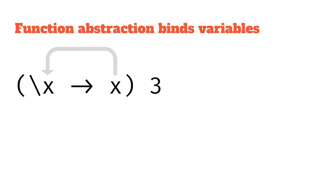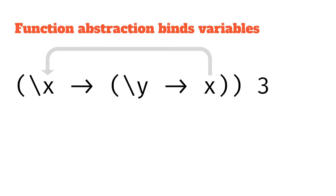We might have a slightly more complicated expression. For example, if we have a nested abstraction where x goes to another function, which is y goes to x, this interior x is still bound by that top-level x. It's not bound by y because they're different symbols. That x has been bound by the function abstraction above it — the parent of that. If this were a y, the y would be bound by the function abstraction there.